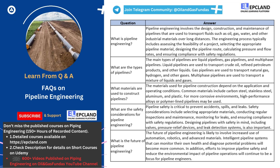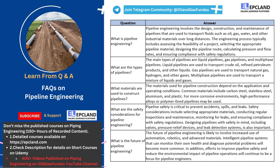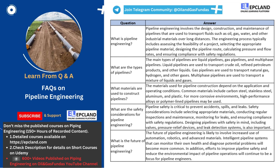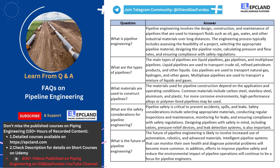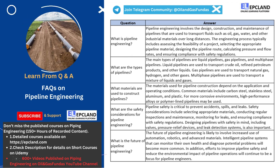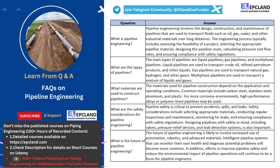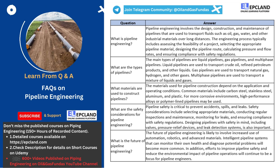Carbon steel is the most widely used material for pipeline construction due to its strength and durability. Stainless steel is another common material used for pipelines that require higher resistance to corrosion and high temperatures. For more corrosive environments, high-performance alloys such as nickel alloys, titanium alloys, or copper-nickel alloys may be used, often in chemical processing and offshore oil and gas production. Plastic pipelines are becoming increasingly popular due to their resistance to corrosion and low cost. Polyethylene, PVC, and fiberglass-reinforced plastic are commonly used materials for plastic pipelines.